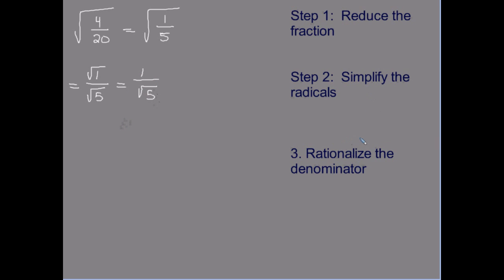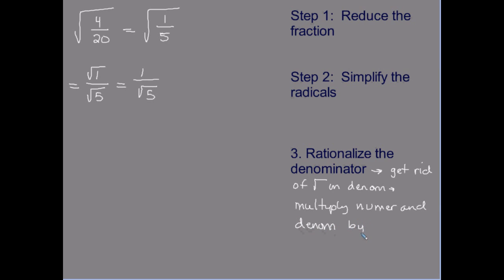Next, I'm going to do a process called rationalizing the denominator. Rationalizing the denominator is how we get rid of a square root in the denominator. To do this, we multiply both the numerator and the denominator by the denominator, or by something called a conjugate, which we'll discuss in a minute. For right now, we're going to multiply by the denominator.